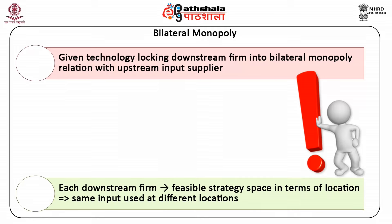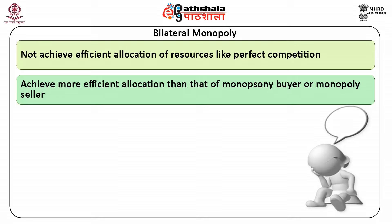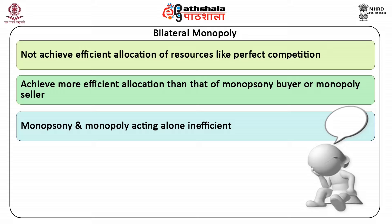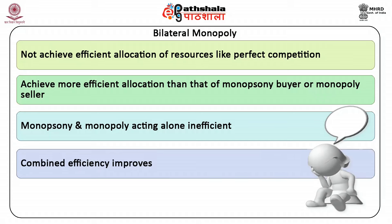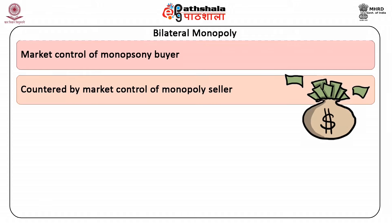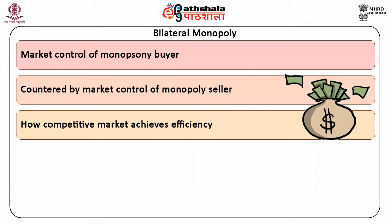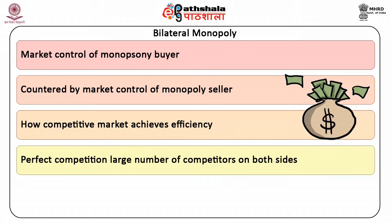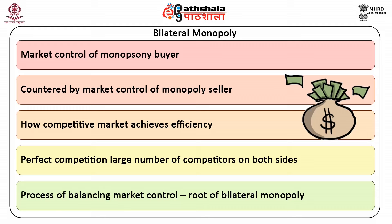Bilateral monopoly does not achieve an efficient allocation of resources like that found with perfect competition. Interestingly, though, it can achieve a more efficient allocation than that of either a monopsony buyer by itself or a monopoly seller by itself. While monopsony and monopoly acting alone tend to be extremely inefficient, when combined, efficiency often improves — suggesting that two wrongs do make a right. The reason is that the market control of the monopsony buyer is countered by the market control of the monopoly seller, which is how a competitive market achieves efficiency. Perfect competition has a large number of competitors on both sides rather than only one, and this process of balancing market control is at the root of bilateral monopoly.